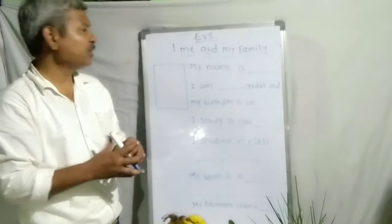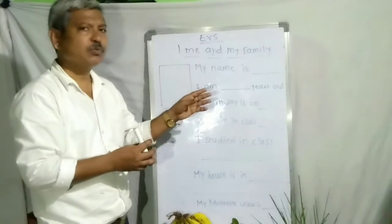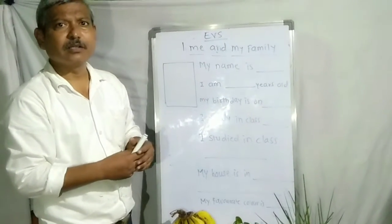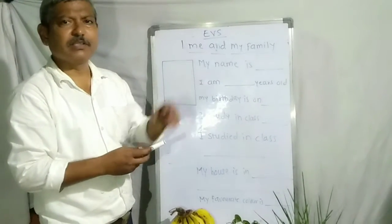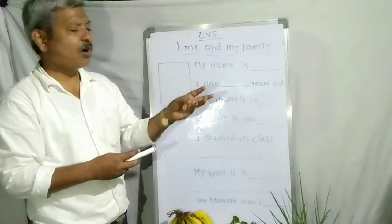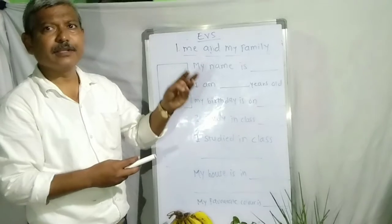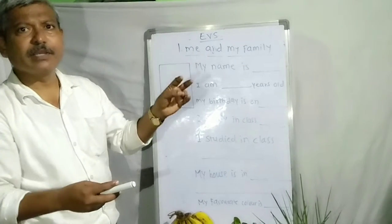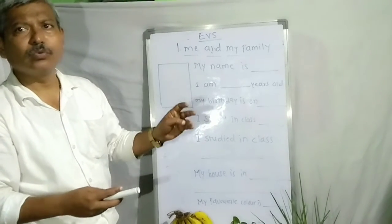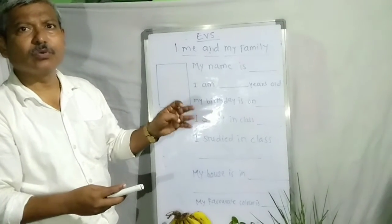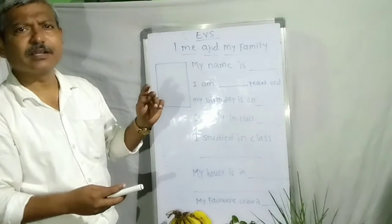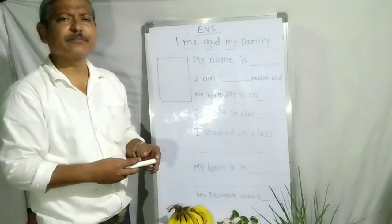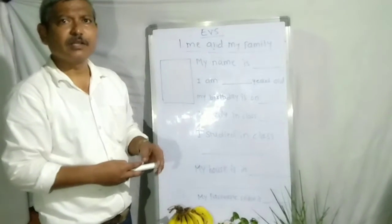Some things are moving. We call them living things. For example, the dog, hen, cat, human being, cow, buffalo, tiger, snake — all these are considered as living things.